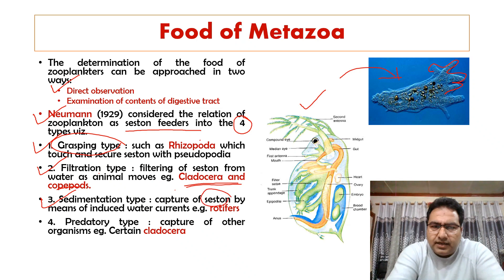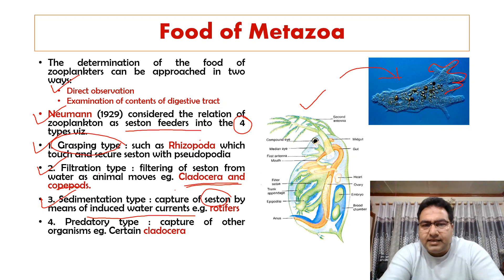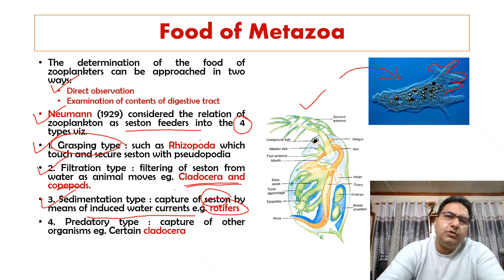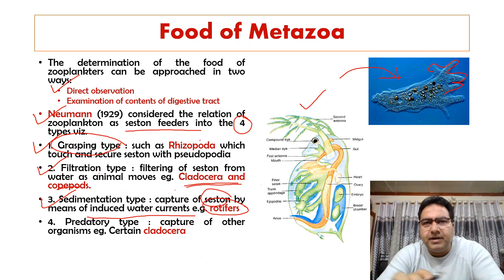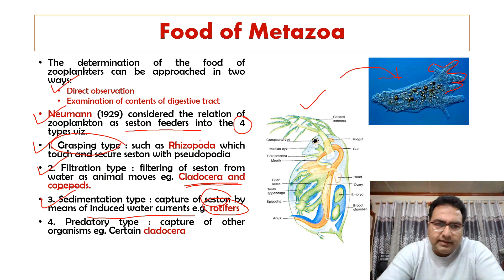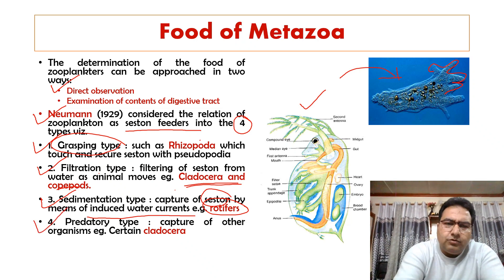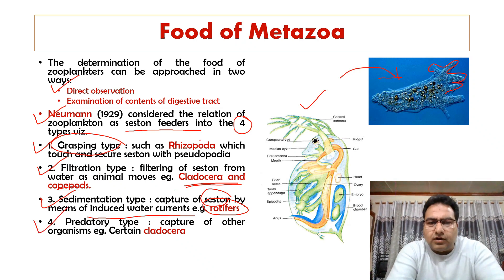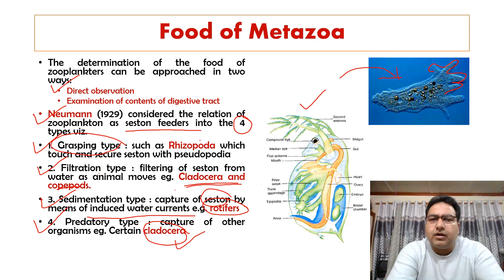The third category is the sedimentation type, where organisms capture food by means of induced water currents — like rotifers, also called wheel animalcules. The fourth type involves organisms that capture other organisms directly, such as certain Cladocera like Daphnia, which actively capture prey.